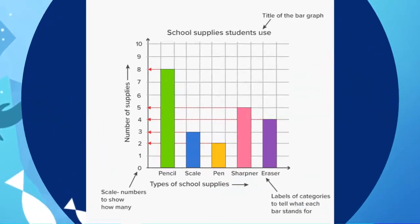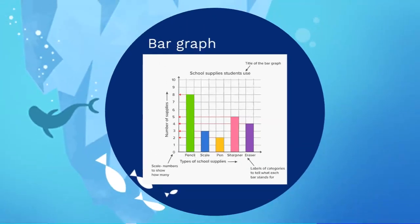As you can see over here, we have a different type of bar graph that talks about the school supplies students use. The types of school supplies shown are: pencils, pen, sharpener, and eraser. The scale shows the numbers to tell how many, and the label talks about the categories to tell what each bar stands for.